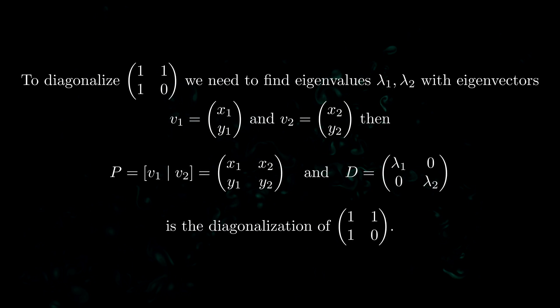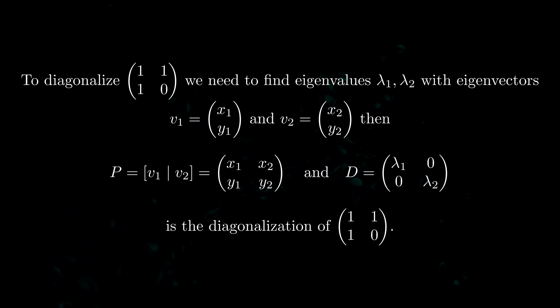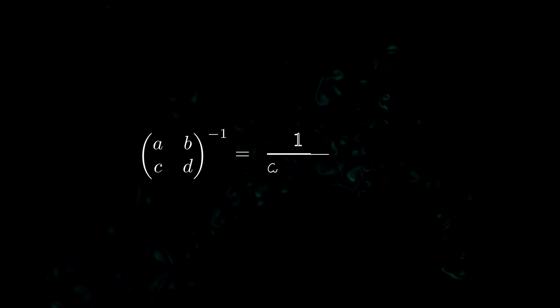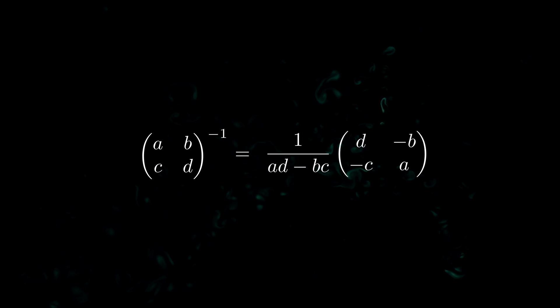So how do we actually diagonalize this 2 by 2 matrix? Well it's actually very simple. All we need to do is find two eigenvalues lambda 1 and lambda 2 and two eigenvectors v1 and v2 as given here and then we can set up the matrix P and the matrix D as it's just given here and these will turn out to be the diagonalization of the matrix that we need to diagonalize. How do we calculate the inverse of P? Well it's very easy there's a very nice formula for it. I won't go into that but the point is the diagonalization just involves calculating the eigenvalues and the eigenvectors of this matrix.